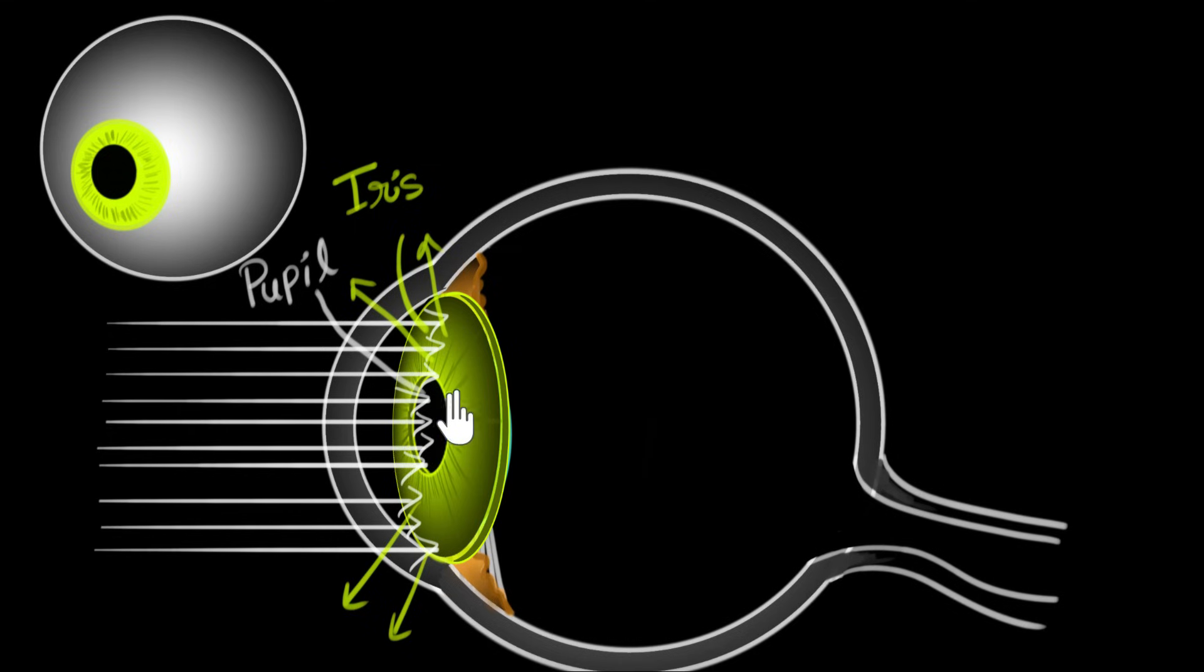And as you can see, the pupil is through which the light enters into our eyes. So through the pupil, light will enter into our eyes. And this is what enables us to see things.